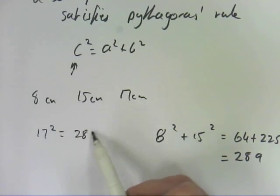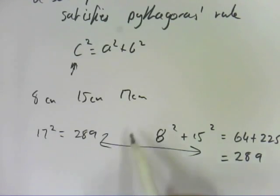And 17 squared is 289. They line up. So therefore these three numbers are a Pythagorean triad.